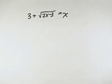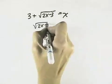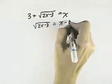We want to solve this radical equation. In order to do that, we need to get the radical by itself on one side of our equation. So I'm going to subtract 3 from the other side of the equation.